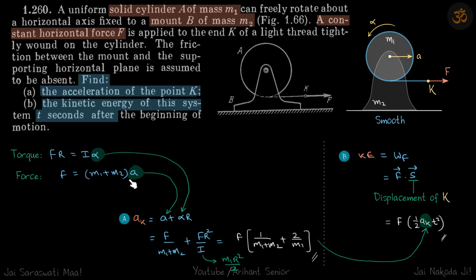Now acceleration of this point K will be acceleration of the center of mass plus α into r, because the sense of the alpha will add to the acceleration a.